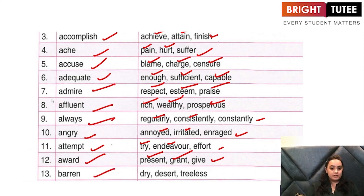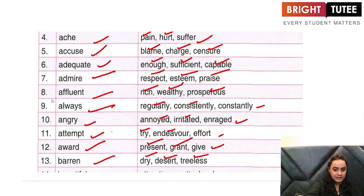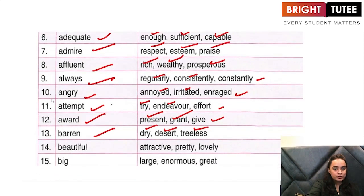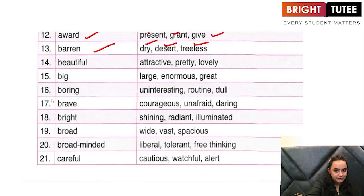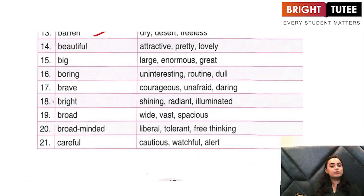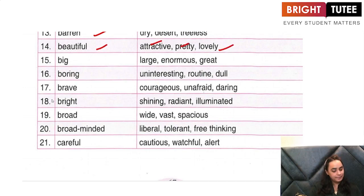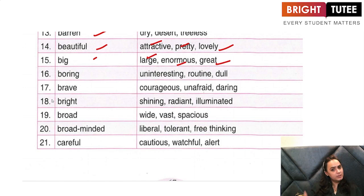'Barren' — empty, dry, tree-less. We say barren land — where there are no trees are the barren lands. 'Beautiful' — the other words for beautiful: attractive, pretty, lovely. 'Big' — the other words for big: large, enormous, great, huge.